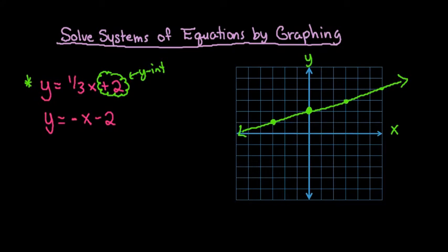So the second graph, I'm going to graph in a different color, so let's do this one in pink. So for this one, remember that the y-intercept is always our starting point, so we're going to start at negative 2 on the y-axis. And our slope,